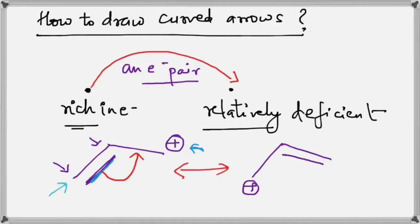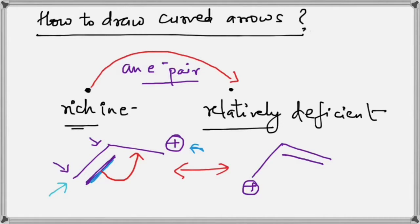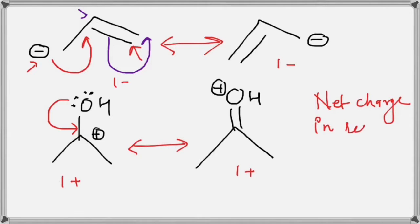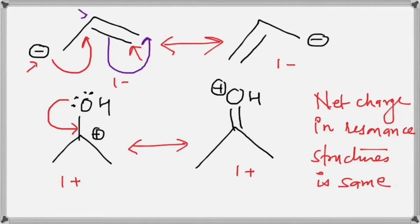In all these structures, notice one important thing: the left structure has one positive charge and the right structure also has one positive charge. Similarly, the structure with a negative charge on the left also has one negative charge on the right. The net charge in resonance structures is always the same. If you want to check whether your resonance structure is right or wrong, always compare the net charge — if they differ, something is wrong.